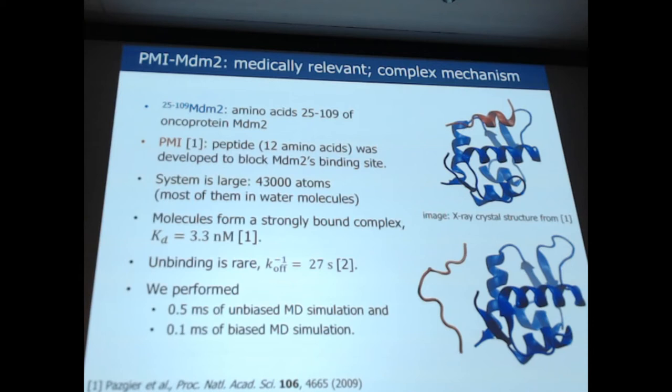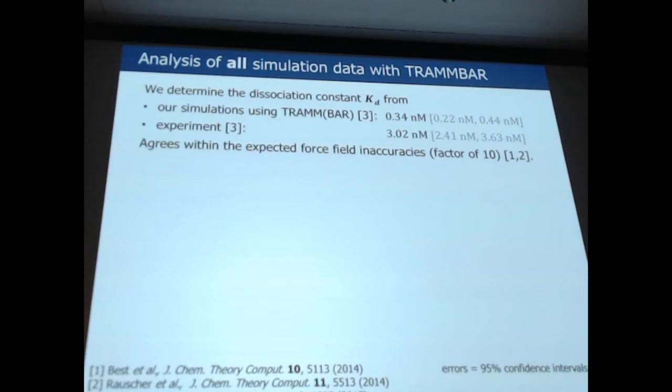So what we get from TRAM is kinetics and free energies. Let's start with the free energies. You can compute the K_D, and the K_D is roughly in agreement with the experiment. So we find 0.34 compared to an experimental value of 3 nanomolar, which is an okay agreement given all the uncertainty of the force field. This is an absolute binding free energy calculation, and one would expect these kinds of errors, or this kind of magnitude in the error.